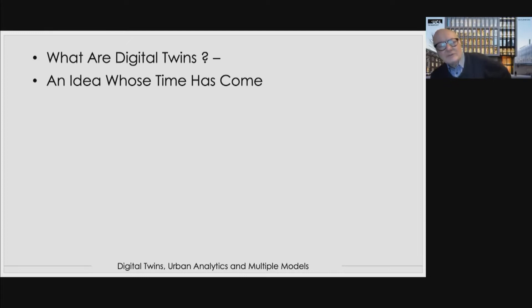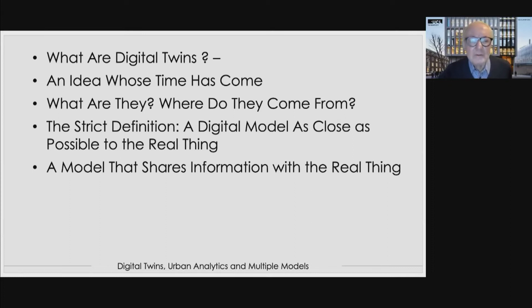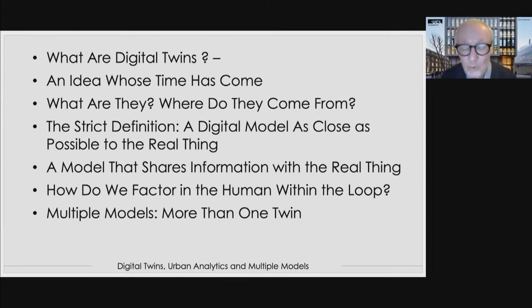It's an idea whose time has come — very evocative of the nature of building a model close to the real system. I want to talk about what digital twins are and where they come from. The strict definition is: a digital model that's as close as possible to the real thing. As it gets closer, it ultimately merges with the real thing and is no longer a model. Another key feature is that the digital twin shares information with the real thing — a transfer of information that's quite important, because many of our models don't do that. And how do we factor the human into the loop? The idea of a twin being close to the real thing breaks apart as soon as we introduce ourselves, which leads to the notion of multiple models — more than one twin — and the key issue is how we integrate them.